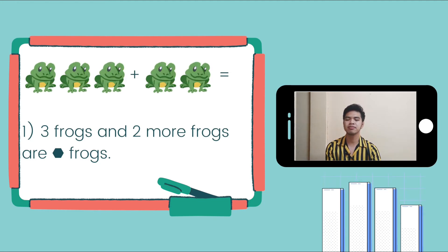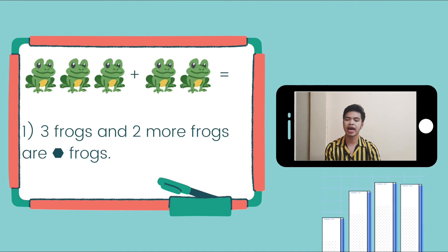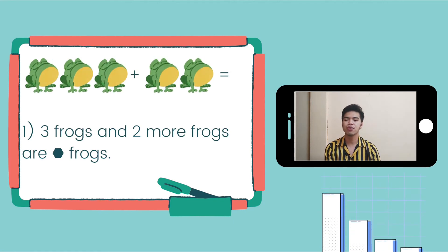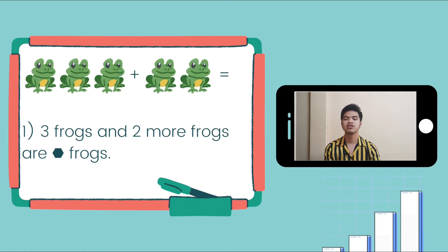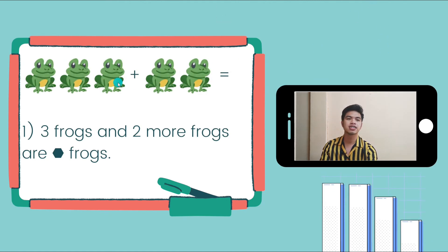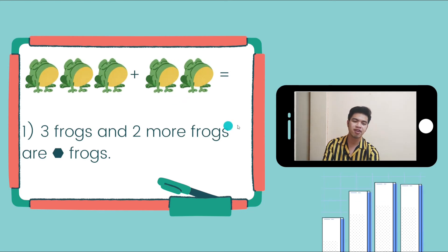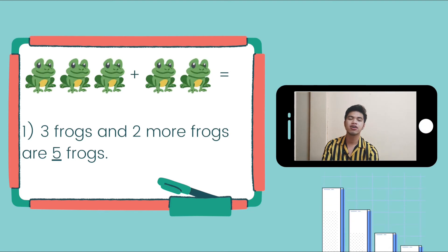The first problem is number 1. 3 frogs and 2 more frogs are blank frogs. How many frogs are there? There were 3 frogs and then there are 2 more frogs. We're going to count them all. Let's begin. One, two, three, four, five. There are 5 frogs. So, we're going to write 5 inside the hexagon.